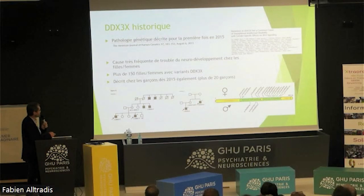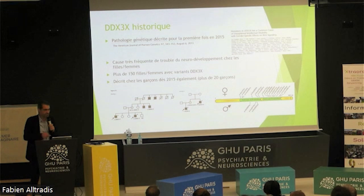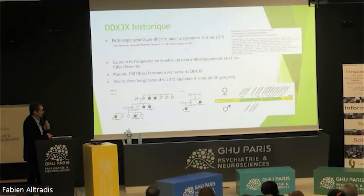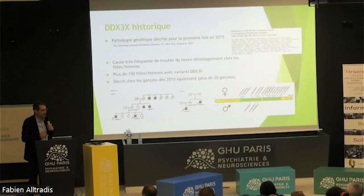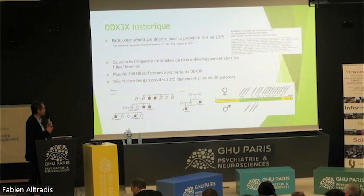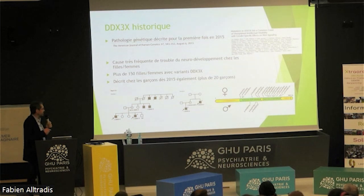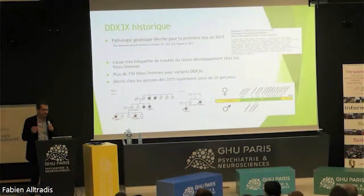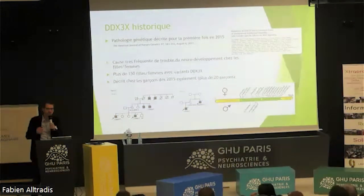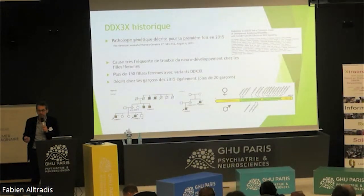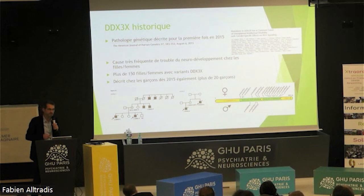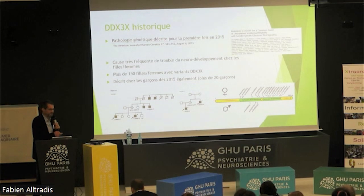DDX3X is a genetic disease described for the first time in 2015 — not so long ago. And quickly we understood that it was a very frequent cause of neurodevelopmental disorders in girls or women — over 150 cases in the literature.